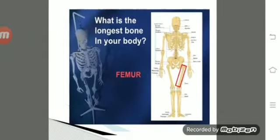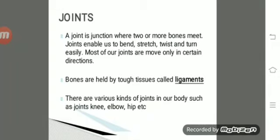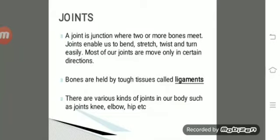A joint is the point where two bones meet. Joints enable us to bend, stretch, twist, and turn easily. Most bones can only move in certain directions. Bones are held together by tough tissues called ligaments. There are various kinds of joints in our body, such as the knee, elbow, hip, and others.